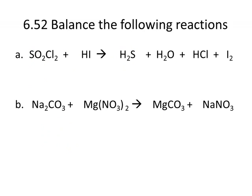Balance the following reactions. This is a little more difficult — I've got more elements to think about here. So I've got one sulfur, two oxygens, two chlorines, one hydrogen, and one iodine on the reactant side. And over here I have one sulfur, one oxygen, one chlorine, five hydrogens, and two iodines on the product side.